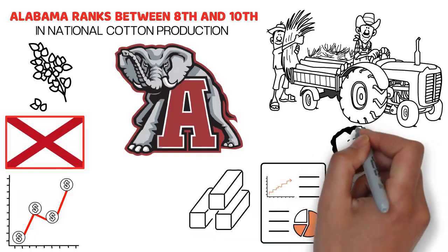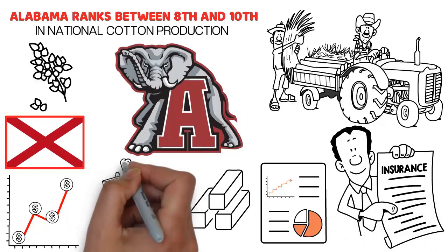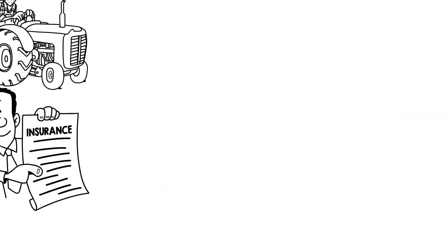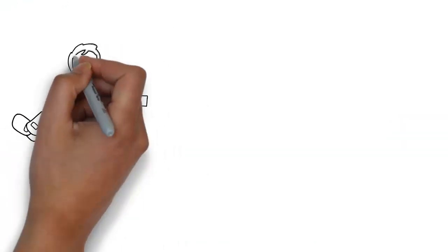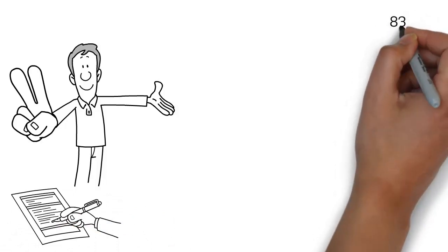The major complaints of consumers related to insurance were about how claims are handled. Across all the insurers, 68% of all complaints were related to claims handling. The second most common issue that consumers are facing is the delay of claims, and there have been about 834 complaints received in this regard.